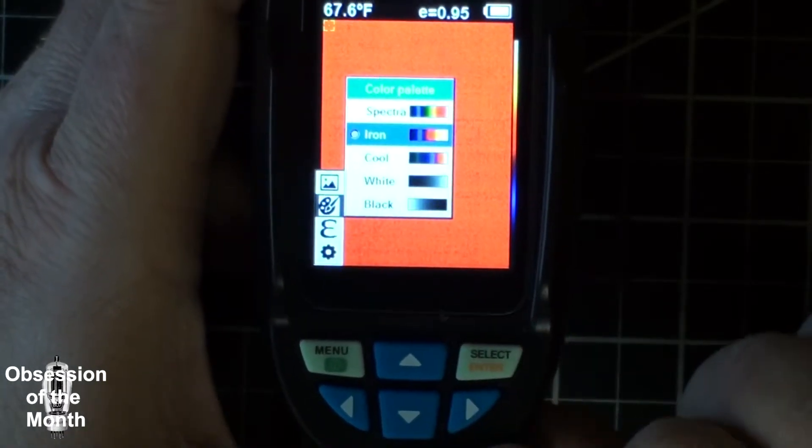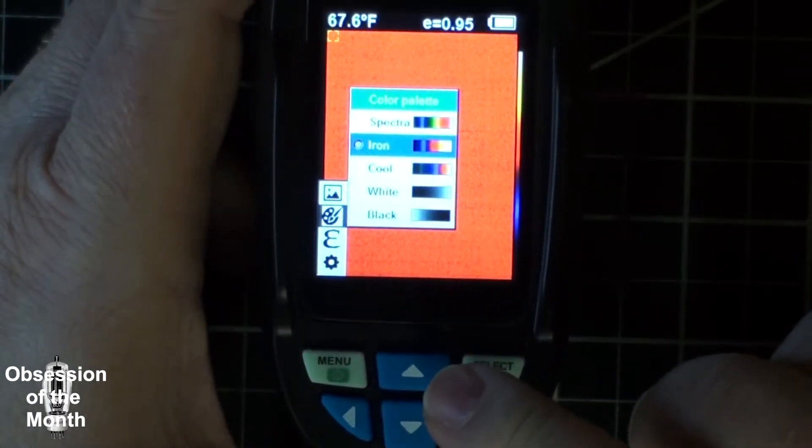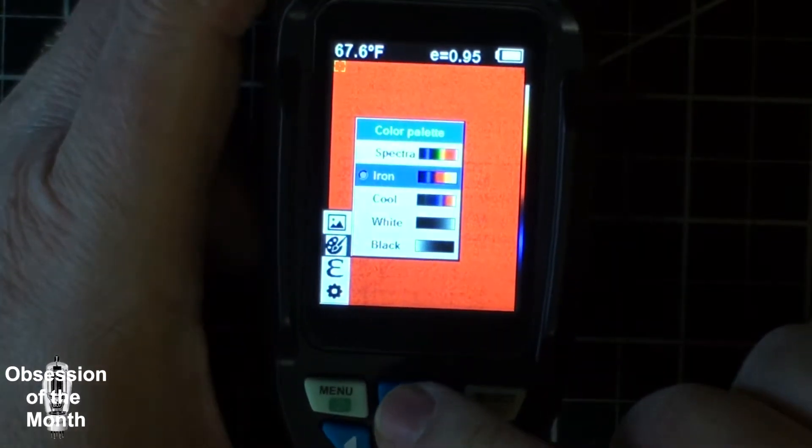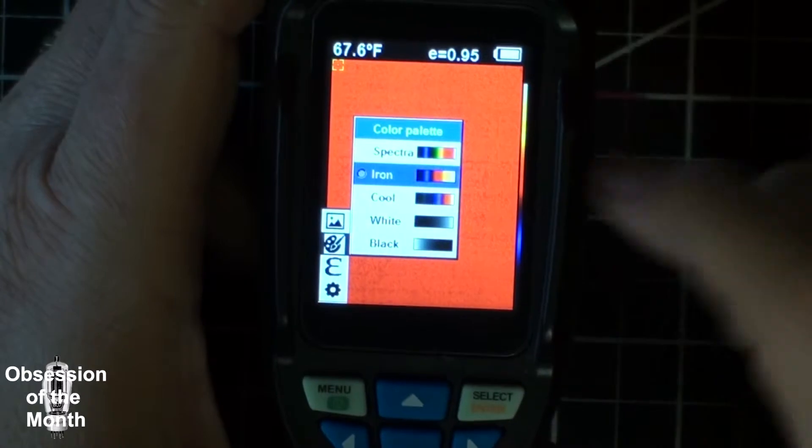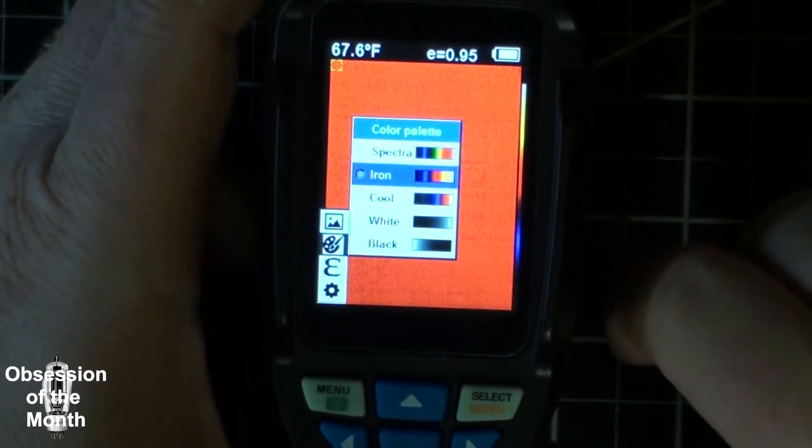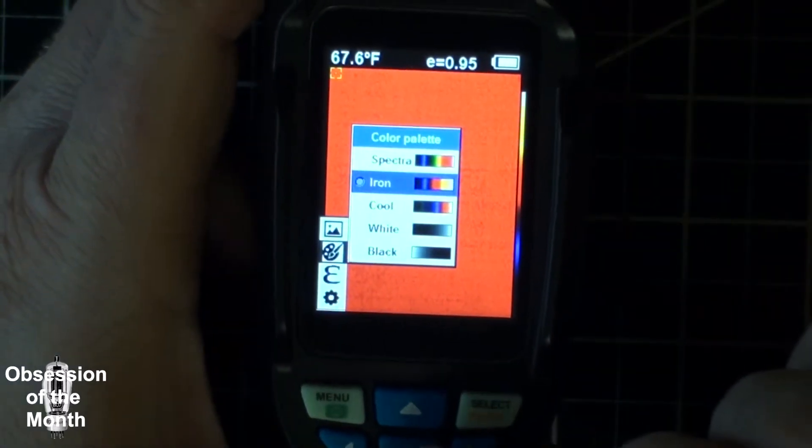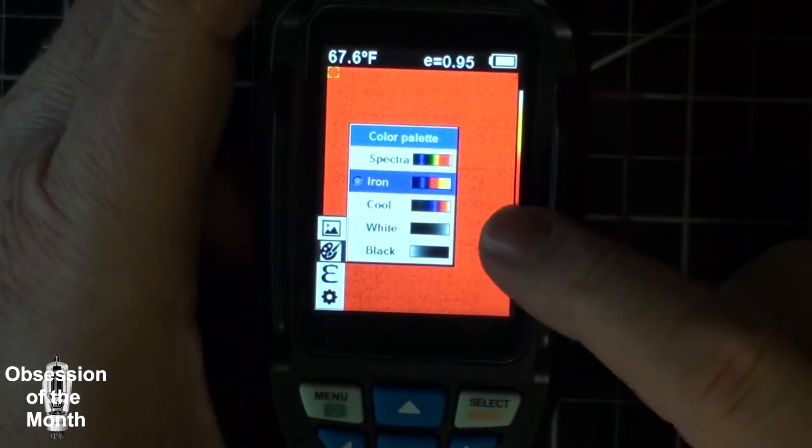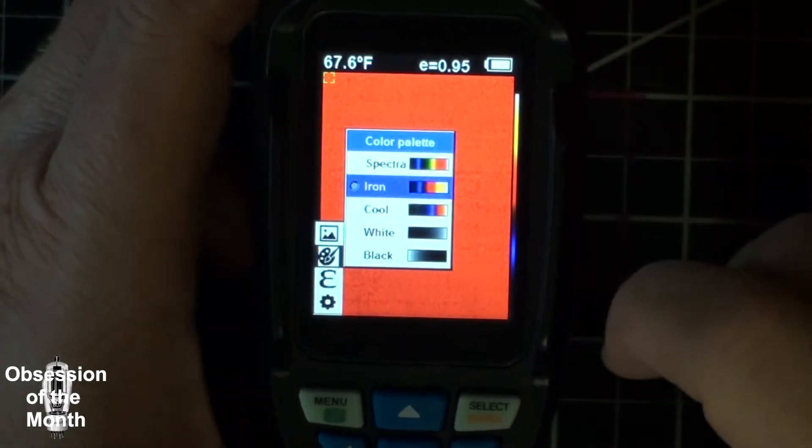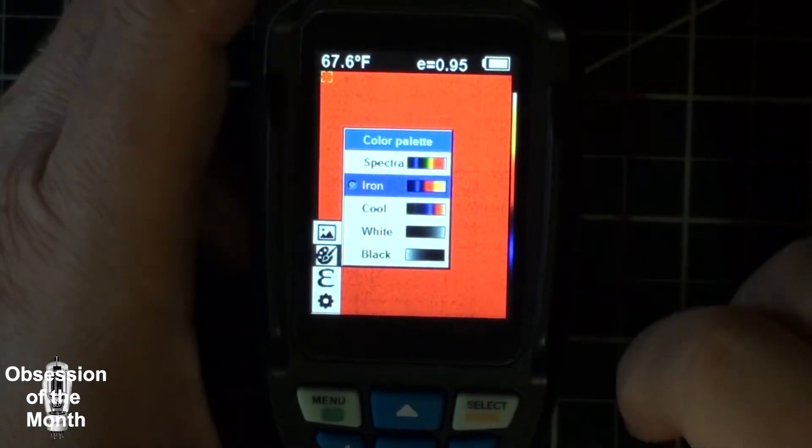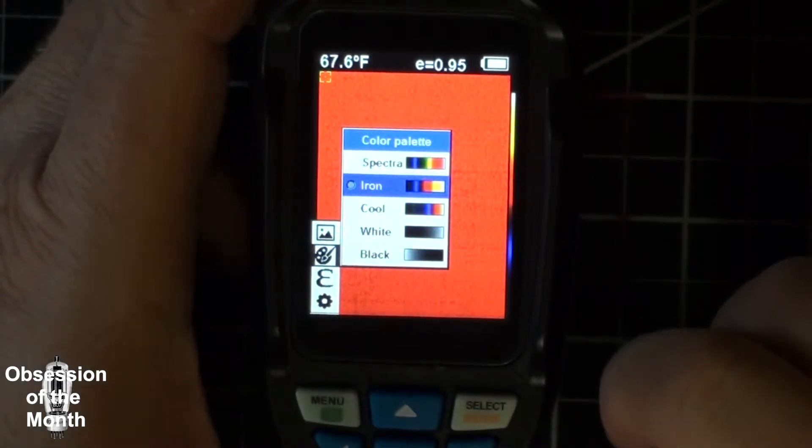There is a setting for the color palette you can select. They're labeled spectra, iron, cool, white, and black. White is items that are hot are white, items that are cooler black, and black is the opposite. Hot is black, cool is white.